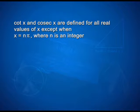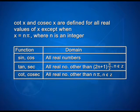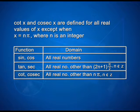We can summarize this in the form of a table: sin x and cos x have domain as all real numbers. Tan x and sec x have domain as all real numbers other than (2n + 1) into π/2, where n belongs to integers. Cot and cosec have domain as all real numbers other than nπ, where n belongs to integers.